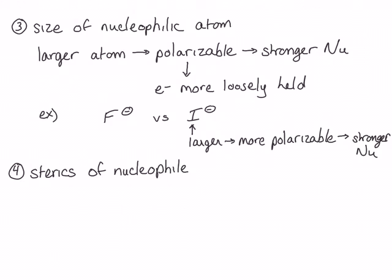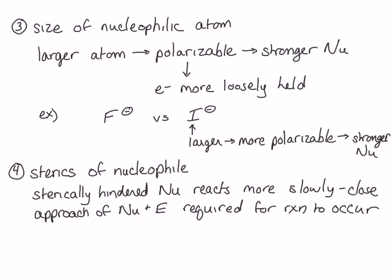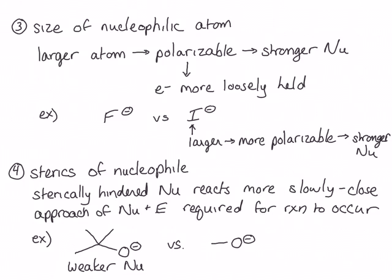The final thing that affects the nucleophilicity of a compound is its sterics. A more sterically hindered nucleophile will react more slowly, because it will have more trouble getting in close enough to react with the electrophile. T-butoxide has a much more sterically hindered nucleophilic atom than does methoxide ion. Because t-butoxide is more sterically hindered, it will react more slowly and be the weaker nucleophile. Methoxide, due to its lack of steric hindrance, will be the stronger nucleophile and will react more quickly.